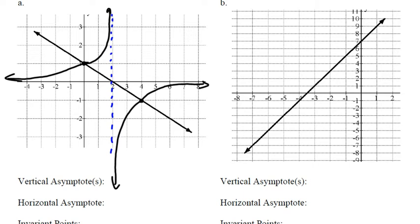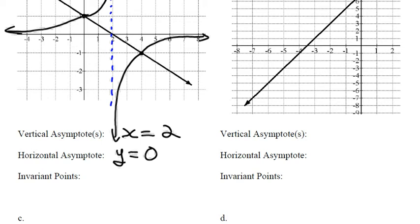The vertical asymptote is the line x = 2. The horizontal asymptote will be y = 0. The invariant points: (0, 1) and (4, negative 1).